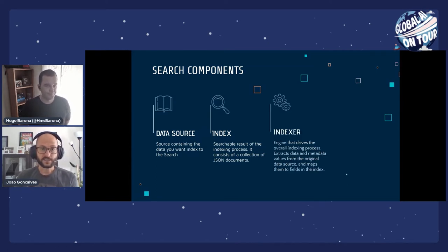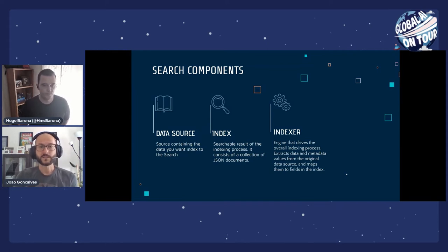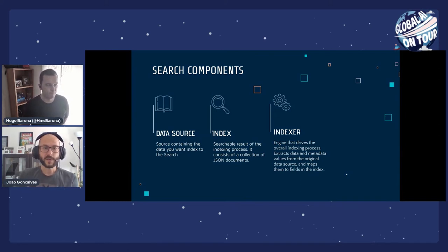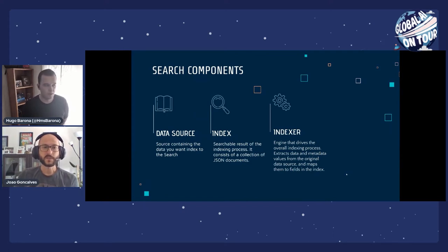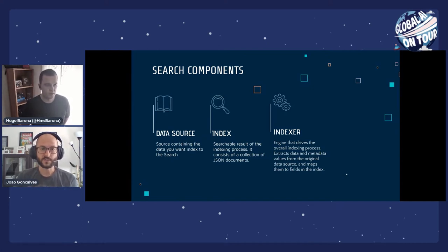We have indexers — the engine that drives the overall indexing process. It extracts data and metadata values from the original data source and maps them to fields in the index. An indexer automatically runs when it's created, but can also be scheduled to run at regular intervals or run on demand to add more documents to the index.